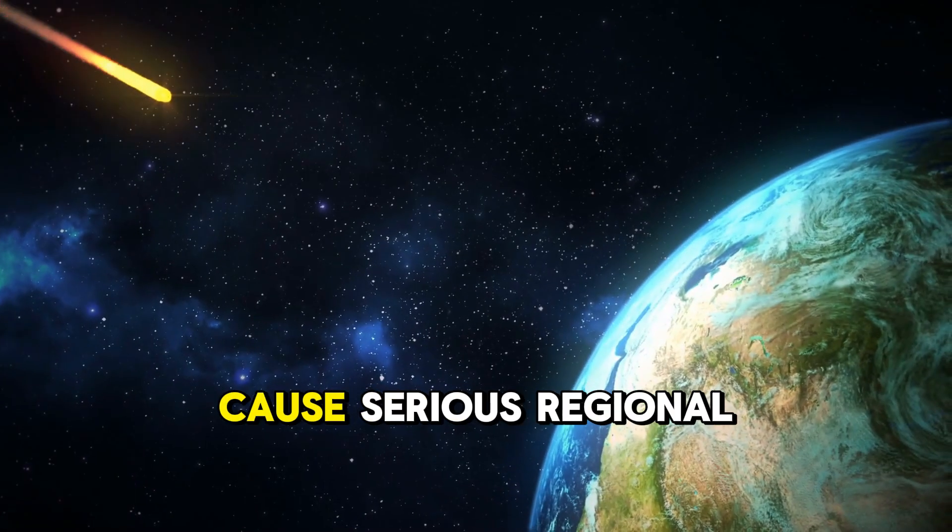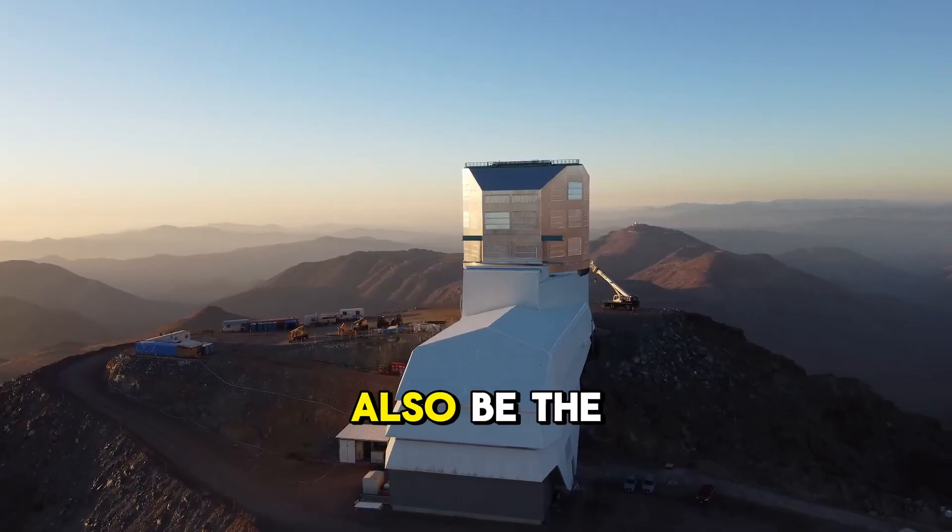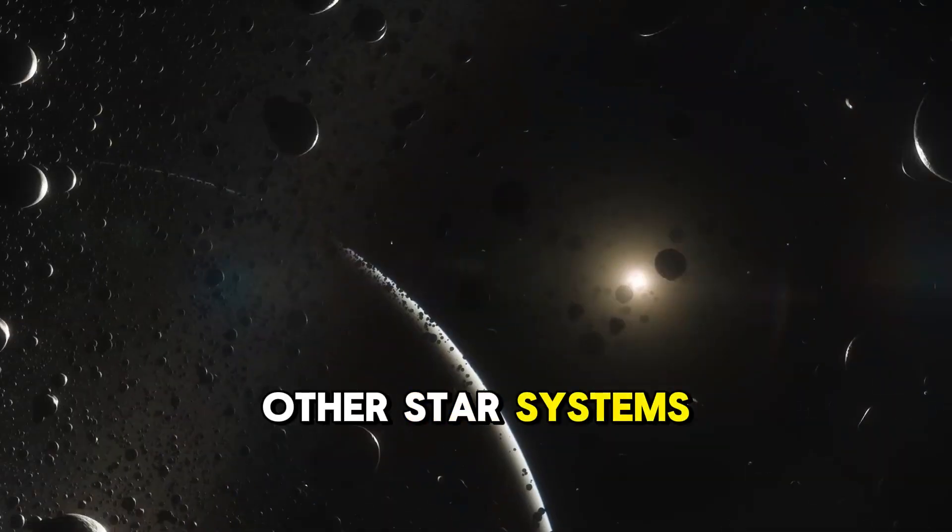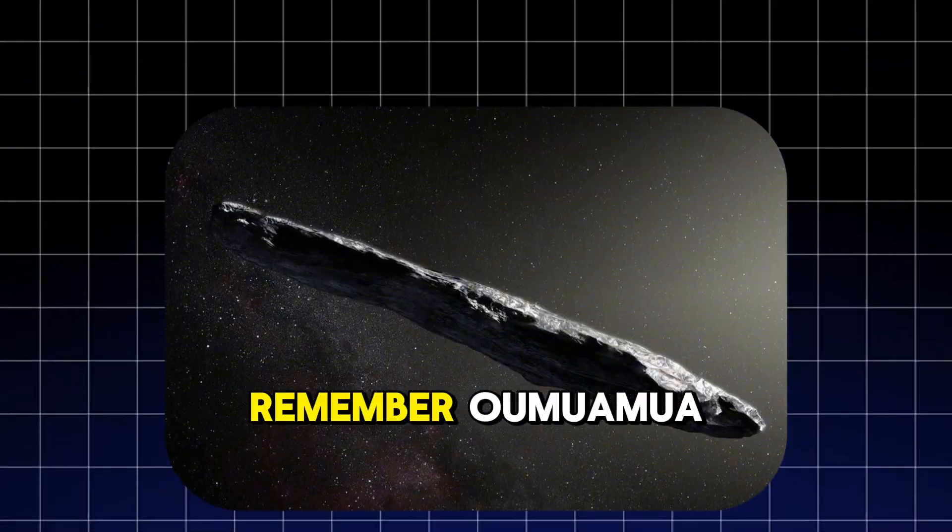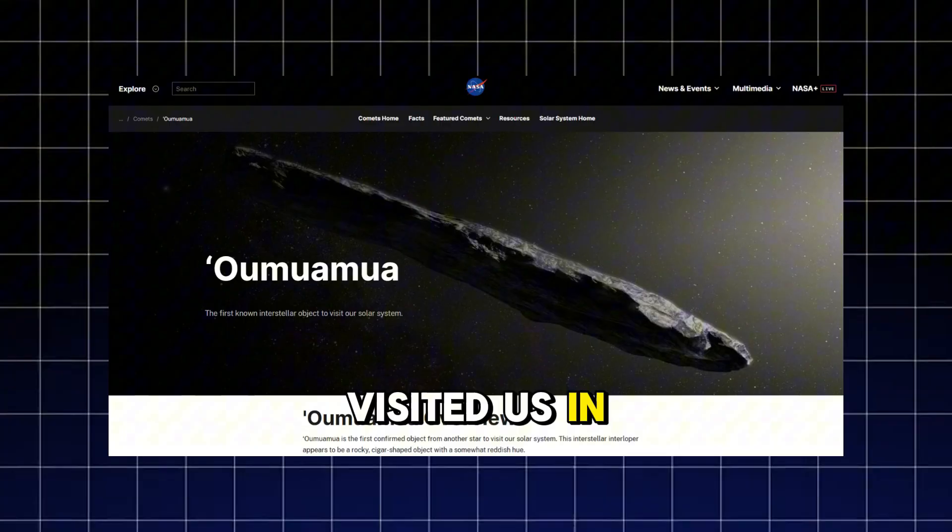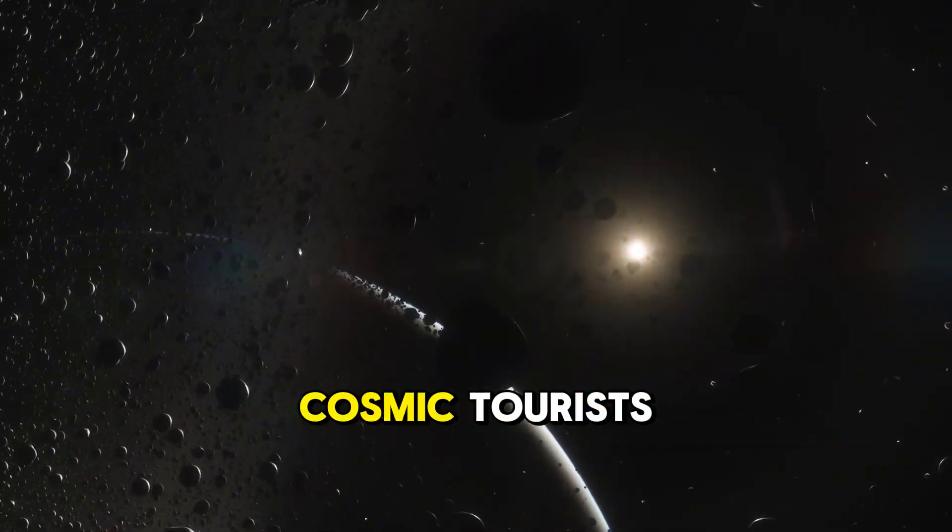The observatory will also be the best at finding interstellar visitors, mysterious objects from other star systems that occasionally pass through our solar system. Remember Oumuamua, that weird cigar-shaped object that visited us in 2017? Rubin will find dozens of these cosmic tourists.